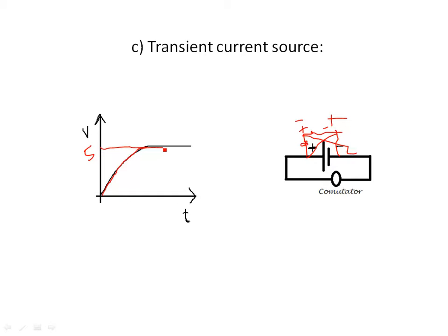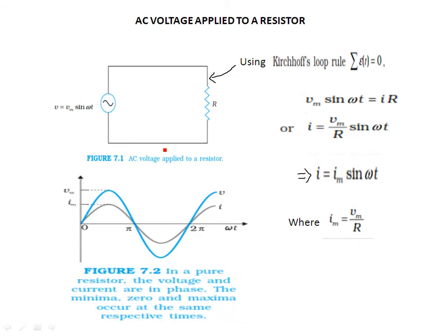For multiple choice questions at entrance and board exam level, this is very important. In the previous lecture you can see that V is equal to E-not sin(ωt). NCERT uses the symbol V, so V equals Vm sin(ωt). This is our source of power, where Vm is the maximum voltage.